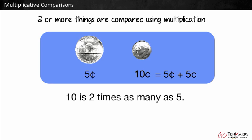So the ten is two times as many as five. This is true because two groups of five, or five groups of two, make ten.